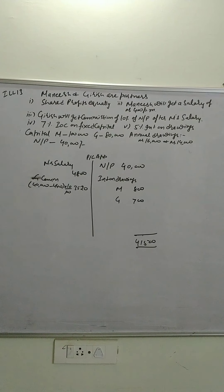So it is 10% of net profit after M's salary. It has nothing to do with the interest on drawings. Net profit minus M's salary, so it will be 30,000, then on that we are calculating G's commission.